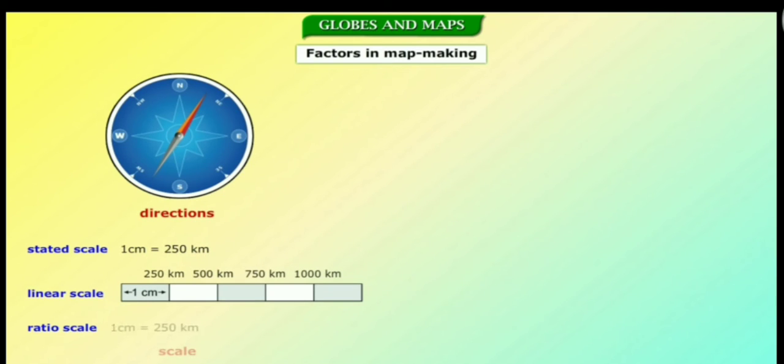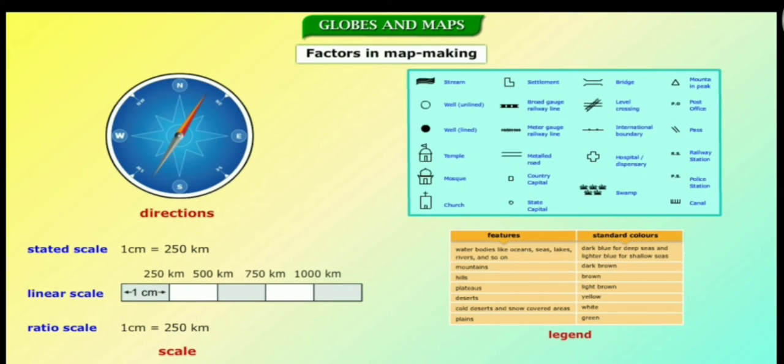The factors that are involved in map making are directions, scale and legend. The symbol indicating directions clearly shows the arrow pointing to the four cardinal directions: north, east, west and south. They help us locate places on a map.